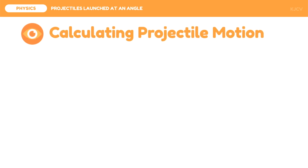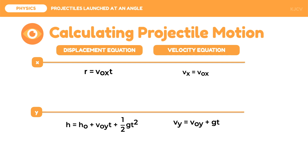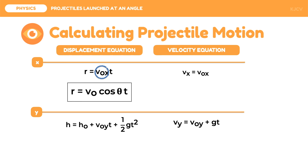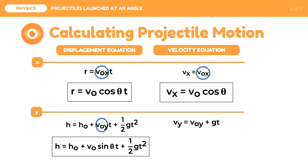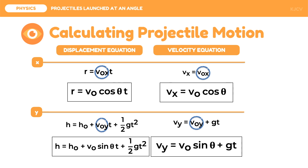The formulas used for projectiles launched horizontally are still applicable for projectiles launched at an angle. However, we need to include the angle of release in the formulas using the initial velocities determined by the trigonometric functions. For displacement along X: the initial velocity along X equals V0 cosine theta, so R equals V0 times cosine theta times time. For velocity along X: V_x equals V0 times cosine theta. For displacement along Y: the initial velocity along Y equals V0 times sine theta, so H equals H0 plus V0 sine theta times time plus one-half gravity times time squared. For velocity along Y: V_y equals V0 times sine theta plus gravity times time.